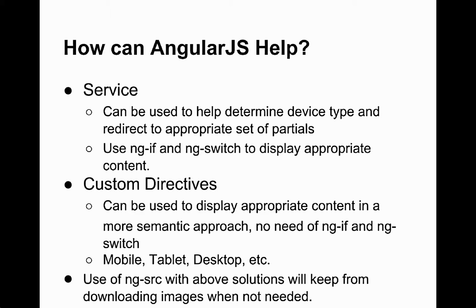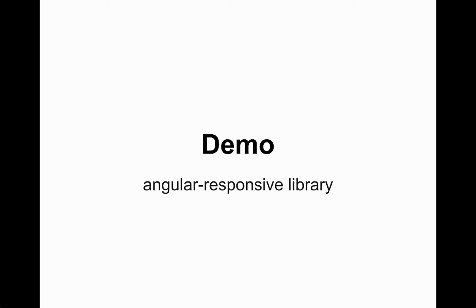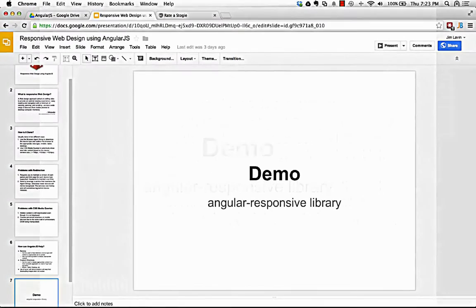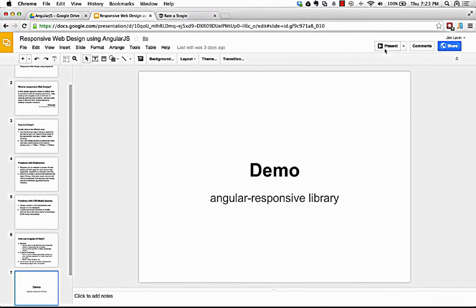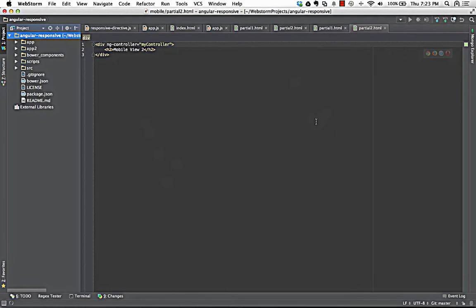I'm going to go through two different versions. The first one uses redirect via a service, feeding it into our route configuration. At the time we set up our routing, we determine whether we're on a mobile device or tablet and redirect everything appropriately. Let me switch over to WebStorm.